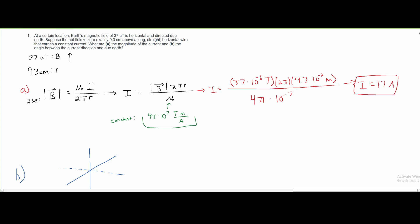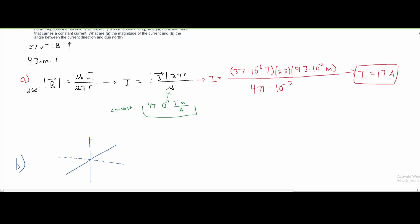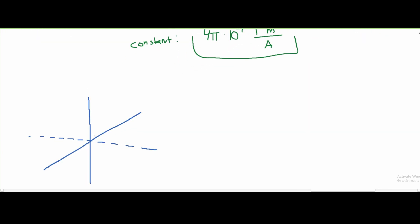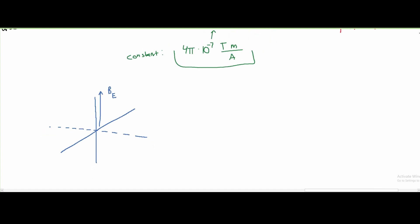And first, we have the Earth's magnetic field is horizontal and directly due north. So, since the Earth's magnetic field is due north, it's going to be pointing in this direction. And we can call this B of E for the magnetic field of Earth.